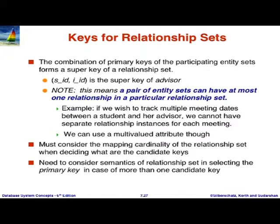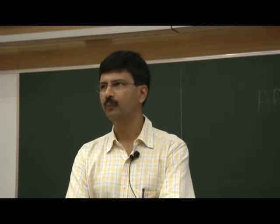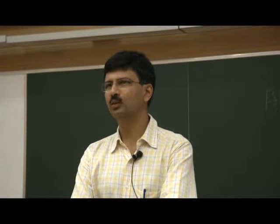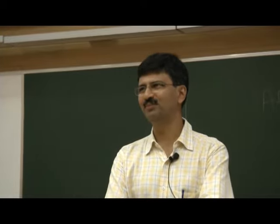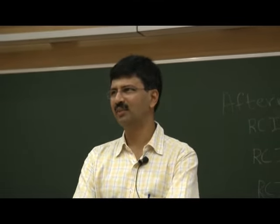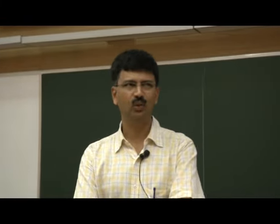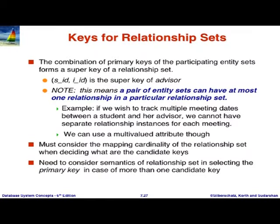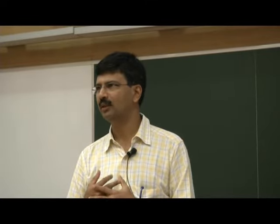Keys for entities are identified and shown with an underline. How you identify the key depends on the enterprise you are modeling. For students, should the key be roll number or Aadhar ID? If a student does not have Aadhar, you cannot make it mandatory, so generally organizations create their own ID — possibly based on Aadhar where available or something they create. You have to create an identifier for every entity and use that. Names cannot be keys because names have conflicts.